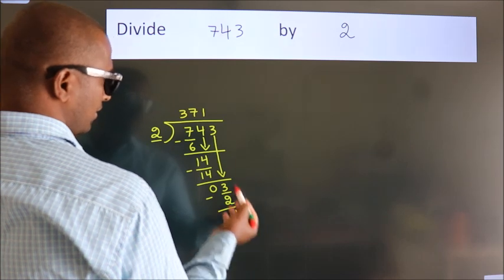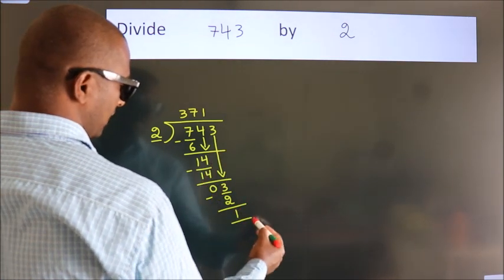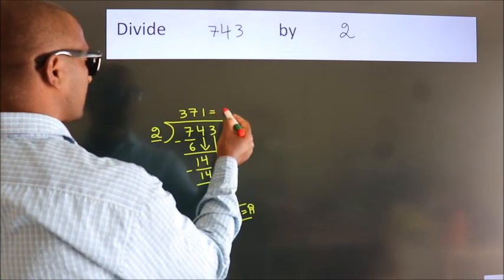After this, no more numbers to bring it down. So we stop here. This is our remainder. This is our quotient.